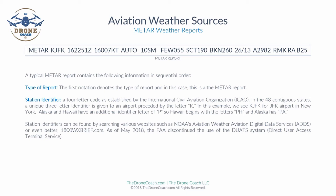A typical METAR report contains the following information in sequential order. First we have the type of report — the first notation denotes that this is a METAR report. Next we have what's called the station identifier or airport identifier.